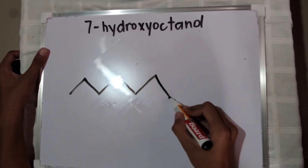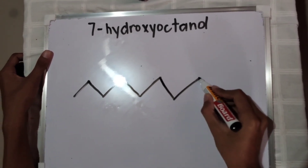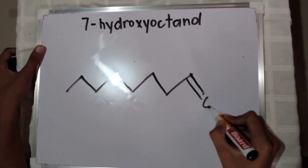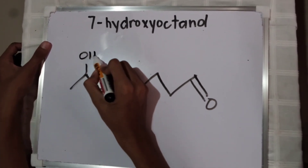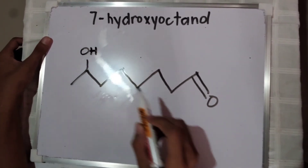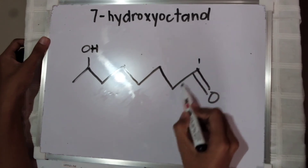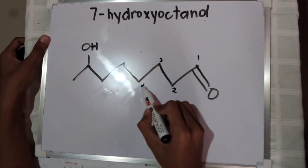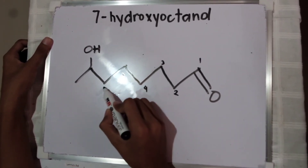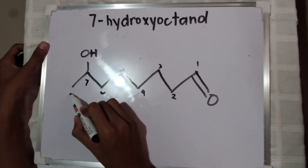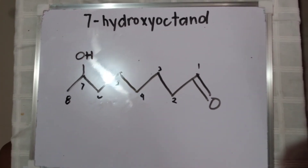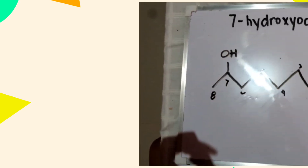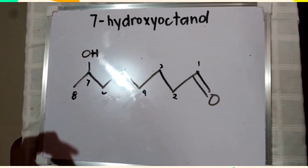Finally, I want to point out that the aldehyde gets precedence over alcohol in naming. So if you have both, it's an aldehyde. Counting the carbons — 1 through 8 — so it is octanal. On carbon 7 we have an OH group. When an OH group is present, we name it as an alcohol substituent. Here we call it 7-hydroxyoctanal.